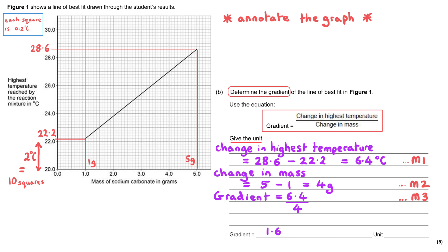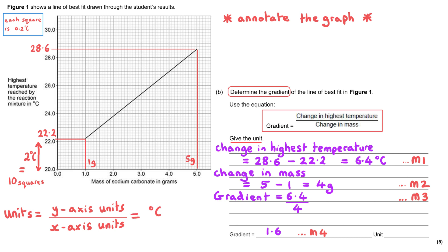The answer is 1.6 — that's the fourth marking point. For the unit, think about how you got the gradient value: highest temperature was in °C, divided by mass in grams, so the unit is degrees C per gram. When writing units, bring everything to a single line fraction — the horizontal line becomes a forward slash — so it's written as °C/g. This gets the fifth mark.